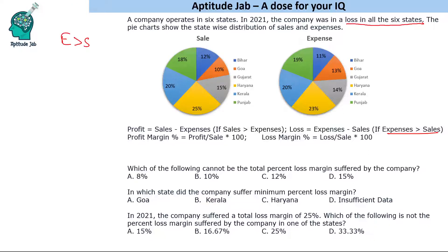Looking at the pie chart, if sales and expenses were equal you'd see them match up. In Bihar, expenses look less; in Goa, expenses already look high; in Punjab, expenses look more. We need to find the state where expenses look very low compared to sales, as that will give us the minimum loss margin.